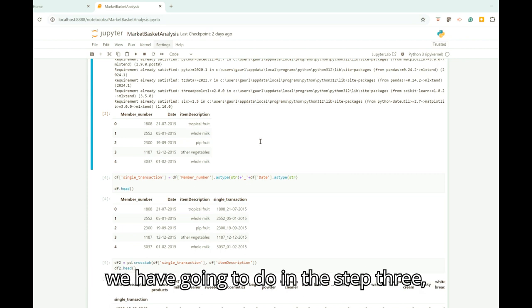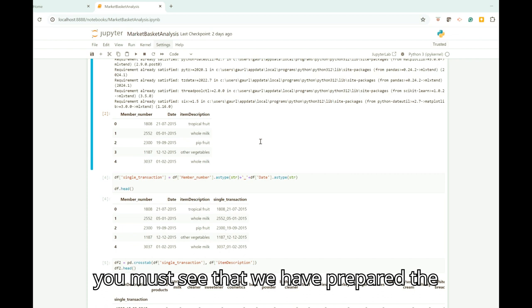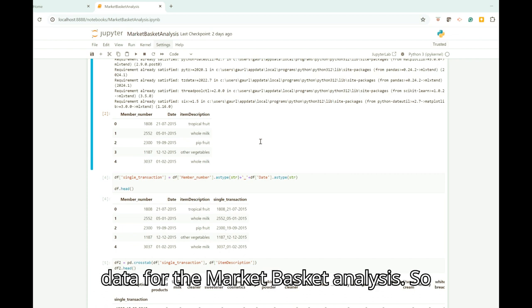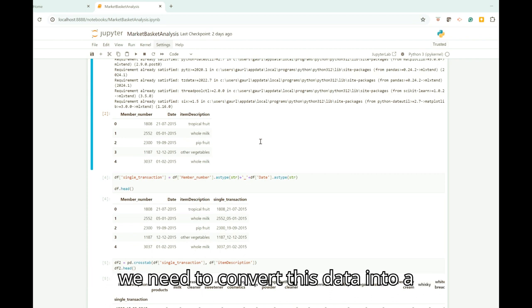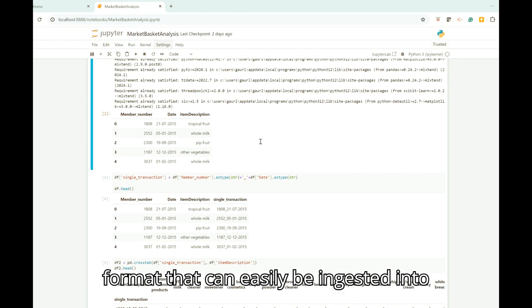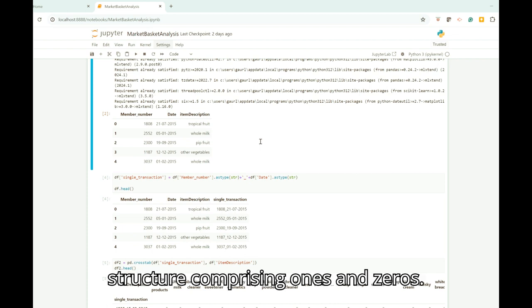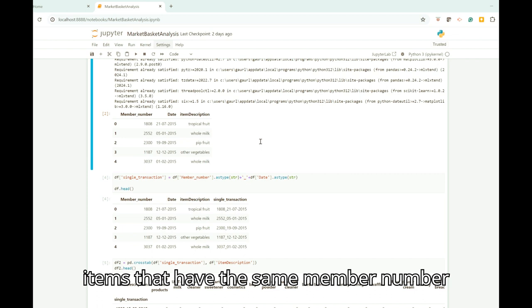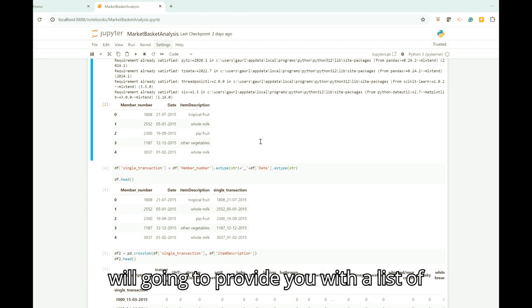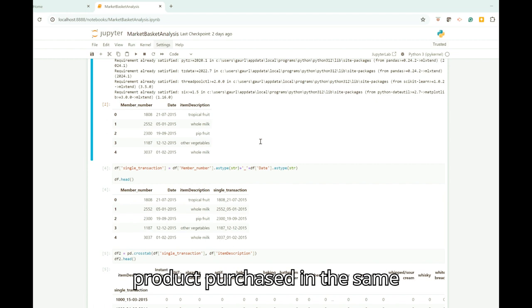So now in step 3, you can see that we have prepared the data for market basket analysis. Before we perform market basket analysis, we need to convert this data into a format that can easily be ingested into the Apriori algorithm. Here we need to turn it into a tabular structure comprising ones and zeros. To achieve that, we need to first group items that have the same member number and date. This will provide you with a list of products purchased in the same transaction.